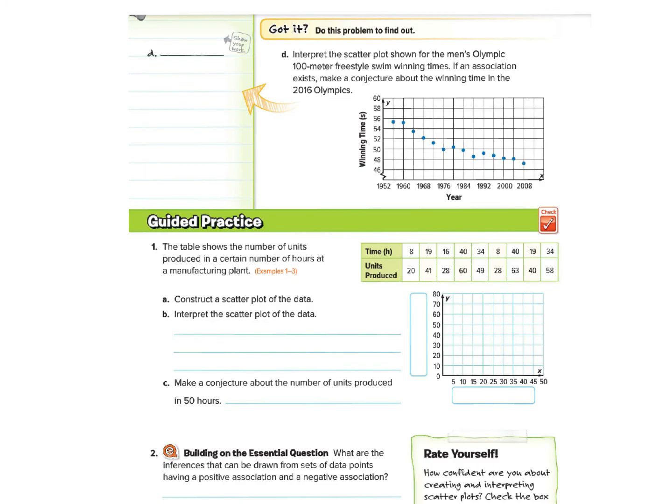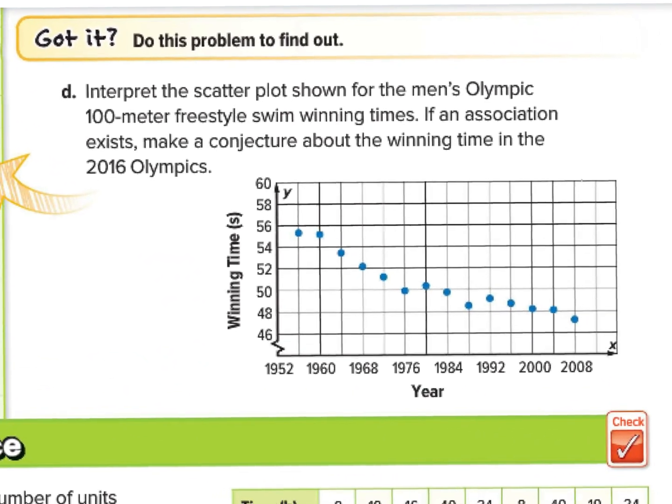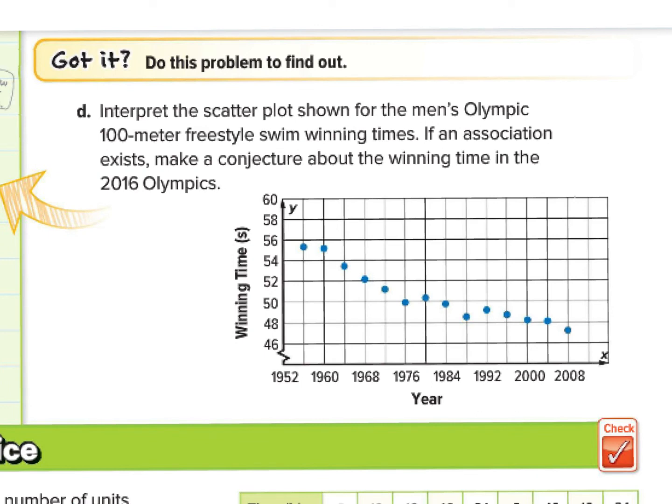And finally, for our last example, we are going to analyze this one. I appreciate that you have stayed on top of this video the entire time, and you have paid close attention to understand today's lesson, so that when we do the guided practice, you will know exactly what to do. Let's take a look here at the interpret the scatterplot shown for the men's Olympic 100 meter freestyle swim winning time. If an association exists, make a conjecture about the winning time in the 2016 Olympics.